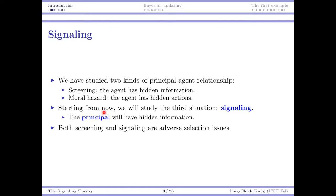Starting from now we will study another kind of problem. In the signaling problem, it is the principal that has private information. The principal knows something that the agent does not know. So in the following weeks when we talk about signaling games, the principal knows some private information but the agent does not. We're going to see what happens when we have this kind of informational structure.